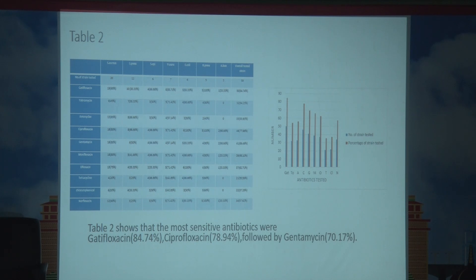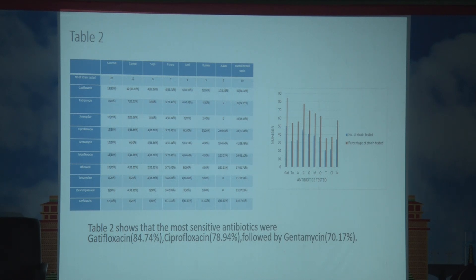From Table 2, the antibiotic sensitivity test results show that the most sensitive antibiotic found was Gatifloxacin at 84.74%, followed by Ciprofloxacin and Gentamicin.